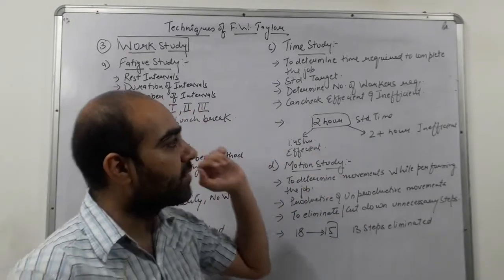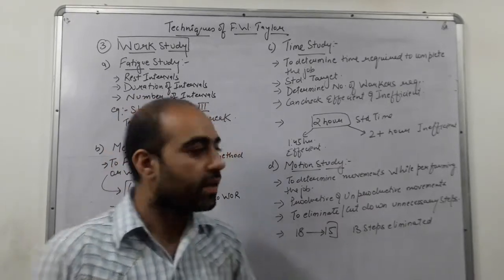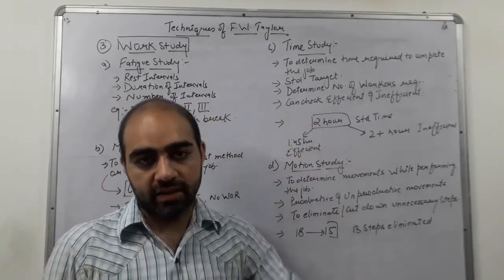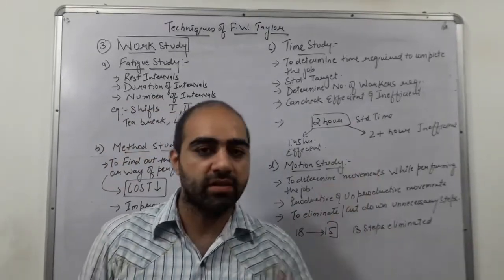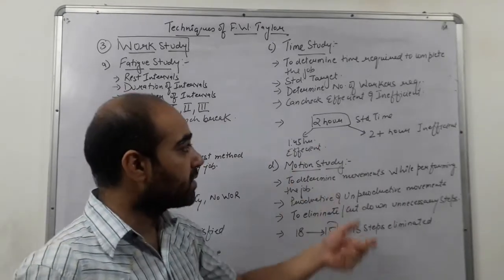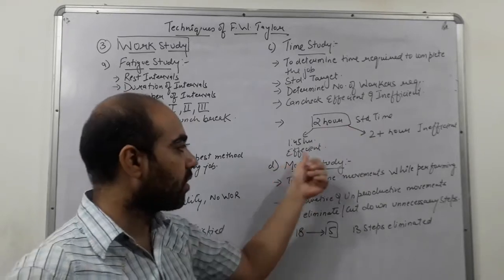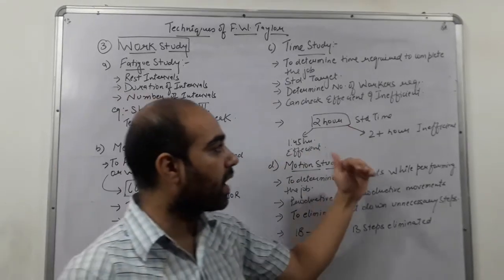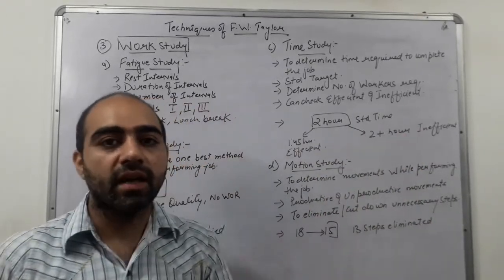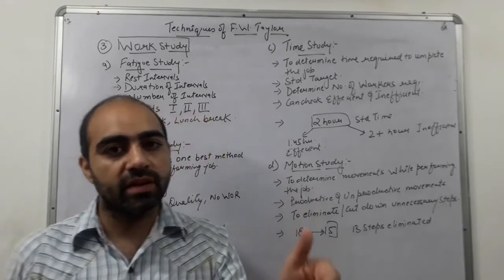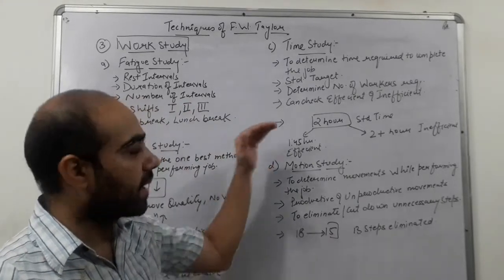We can also check the efficiency and effort of workers to complete the job. For example, if the standard time to manufacture a shoe is two hours and a worker takes more than two hours — three or four hours — then he is an inefficient worker. This helps us identify which workers are efficient and which are inefficient, so we can work on improving the process.